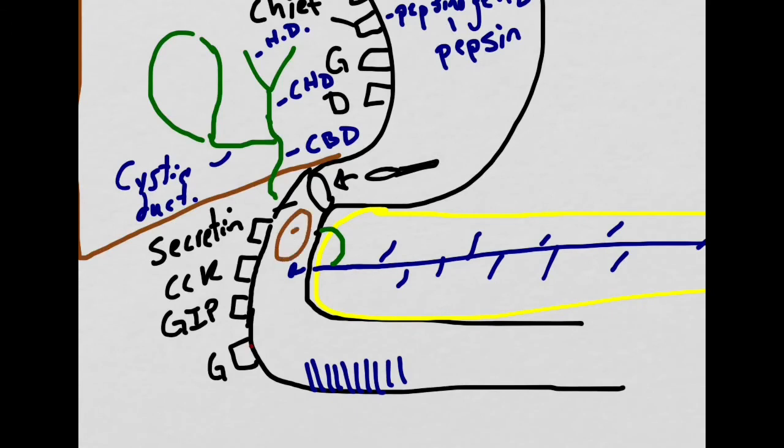When carbohydrates enter the duodenum, the GIP is going to be released and GIP is going to travel to the pancreas and tell the pancreas to release insulin because in the near future, a lot of glucose is going to be absorbed.